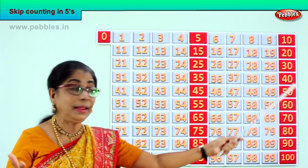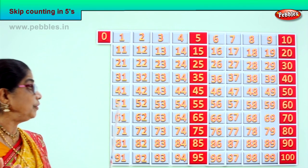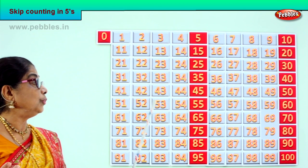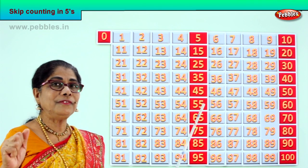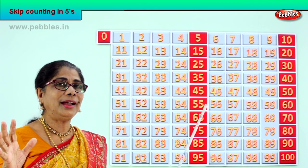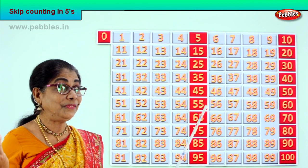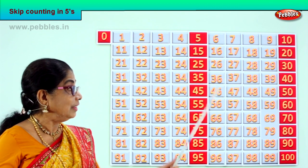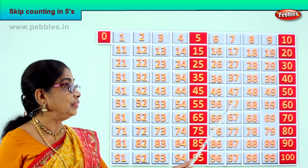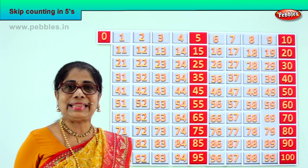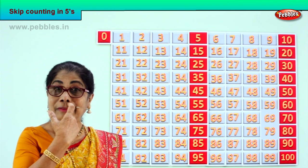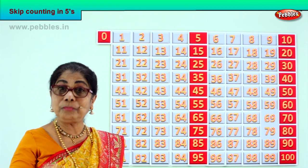After fifty: fifty-one, fifty-two, fifty-three, fifty-four, fifty-five. After fifty-five: fifty-six, fifty-seven, fifty-eight, fifty-nine, sixty.